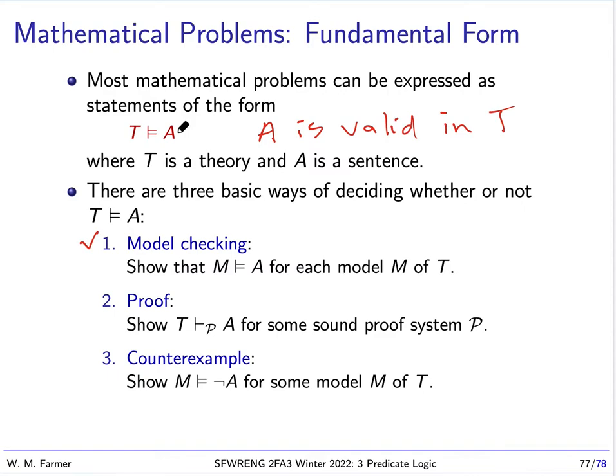Because what this means is that for every model of T, A, that model will be a model of A. The models of T are all models of A, in other words.